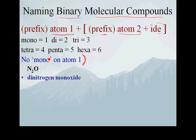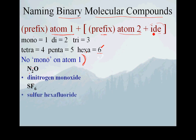Notice one restriction: we never put mono on the first atom. So if there's only one of the first atom, we leave the mono off. For SF₆: the first atom is sulfur, and since there's only one, the first word is simply sulfur. There are six fluorines; the prefix for six is hexa, and we add -ide. So this is sulfur hexafluoride.